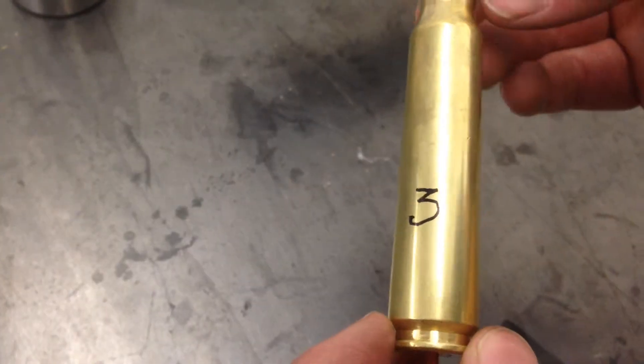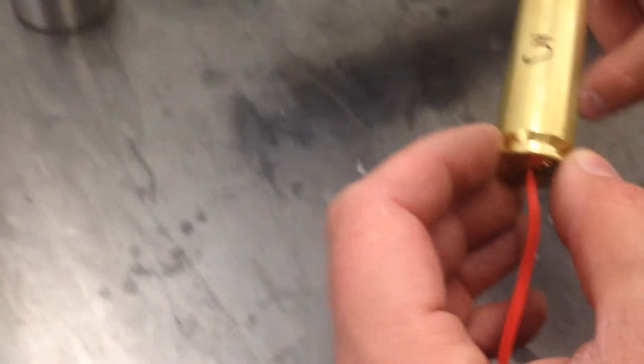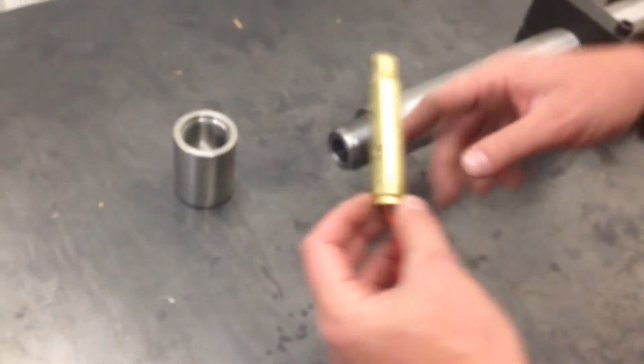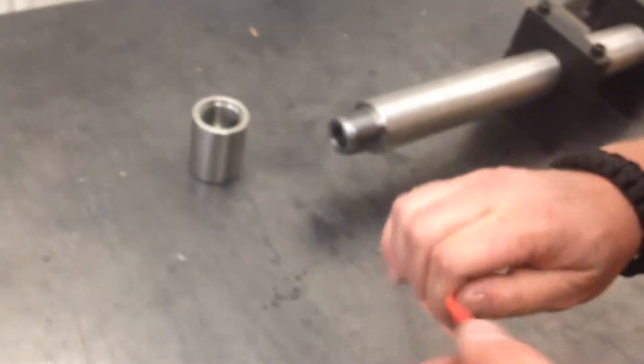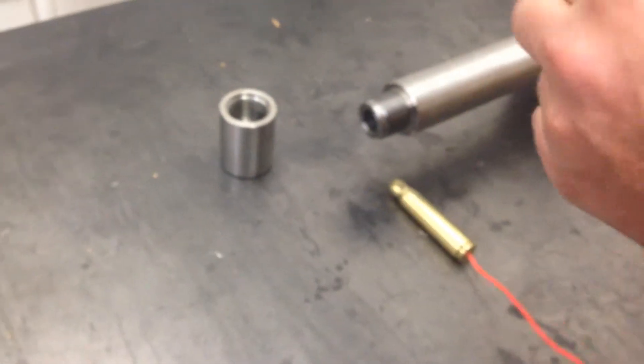So we'll go ahead and move this one in our test chamber again, right over here. We're going to load this up and do a test firing. We've got 100 milliliters of water in here again, which is about 1,400 grains.